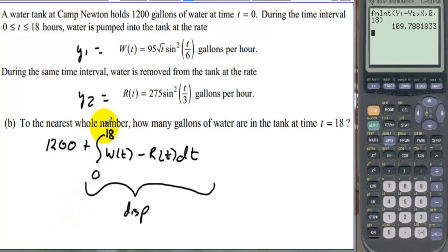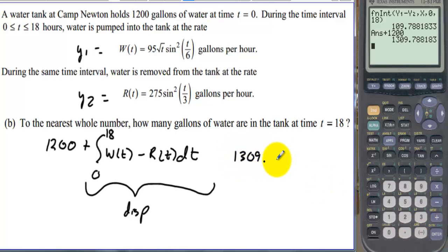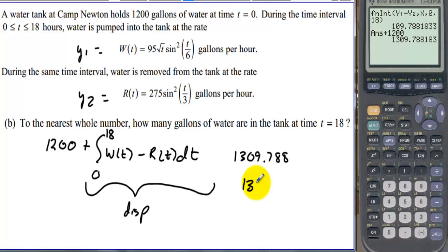At the end of 18 hours there's a difference of 109 gallons, but we started with 1200. So we add 1200, giving us 1309.788 gallons. Since the problem says to the nearest whole number, the answer is 1310 gallons.